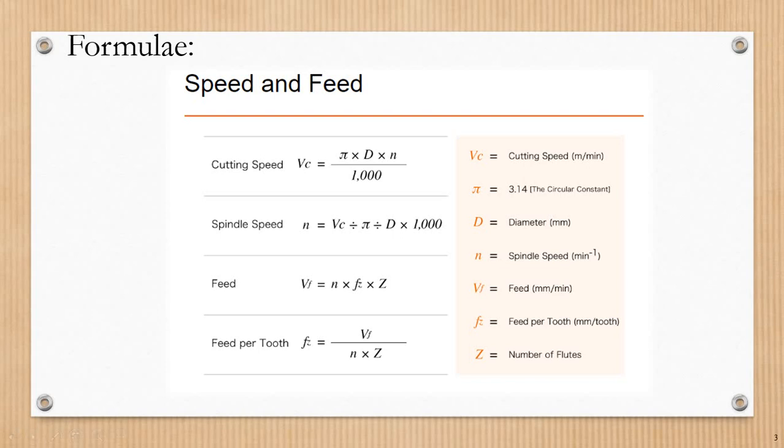If you observe these formulas, they are interlinked. One formula can be derived from another by manipulating the variables. The formulas show the relationship between cutting speed, spindle speed, feed rate, and feed per tooth.